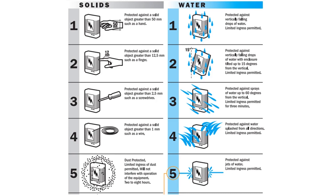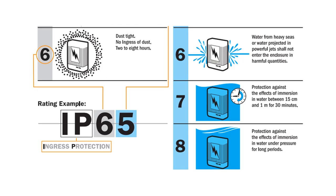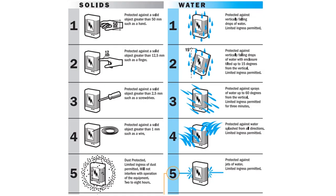In pictorial form, you can see that the first numeral indicates protection against solid foreign bodies and the second numeral indicates protection against water penetration. The commonly used IP rating for a transmitter is IP65, which indicates it is dust tight — no ingress of dust for two to eight hours under test. The second numeral five means protected against jets of water with limited ingress permitted, without having any effect on the operation of the equipment.